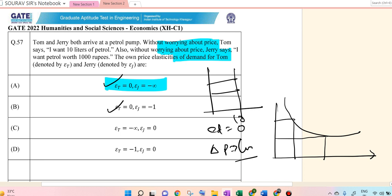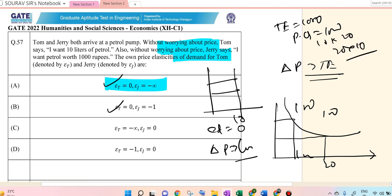Now for this person, it is unit elastic because of this is 1000 and 1000, 10 and 20. So unit elastic, expenditure will be equal to constant. T equal to 1000, total expenditure is 1000 and P into Q equal to 1000. If P and Q are 10 into 100 or 20 into 50, it doesn't matter. So this answer is B.